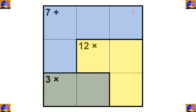We'll name this cage as Cage A, this as Cage B, and this as Cage C. In Cage A there are four cells and the operation is addition. After adding, our result must be seven. So there is only one option, which is one plus one plus two plus three.